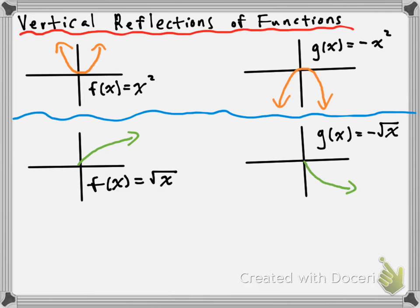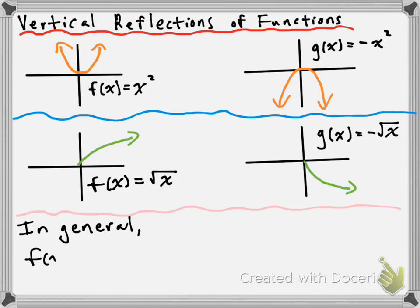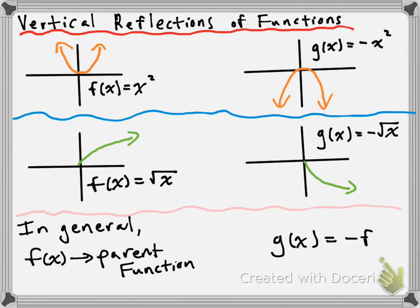So in general, for vertical reflections, this is going to be our rule. If we have f of x, which is a parent function, then if we want to vertically reflect that, we're going to get a function g of x, which is just f of x multiplied by negative 1. You're going to see it as g of x is equal to negative f of x. That will be the function that describes any vertical reflection.